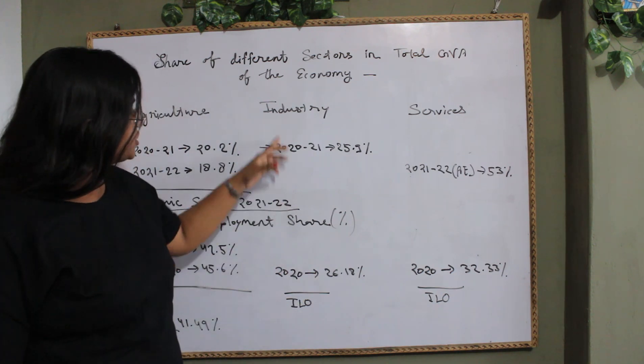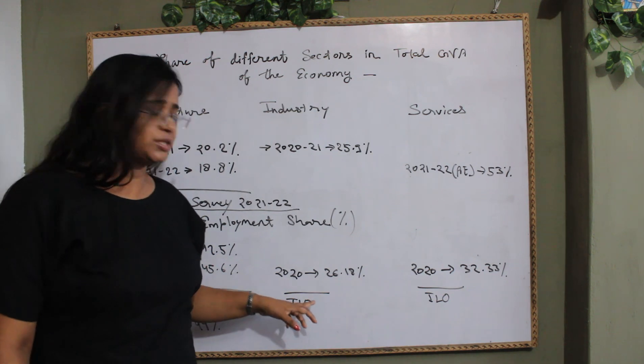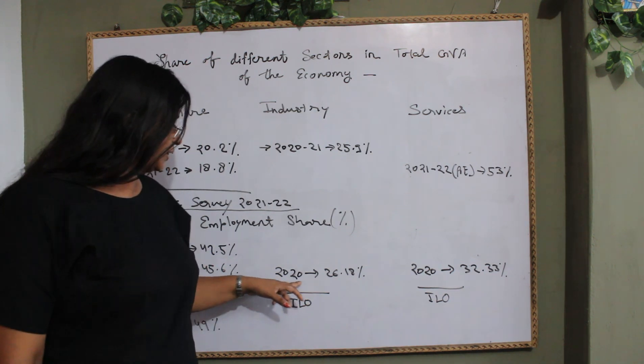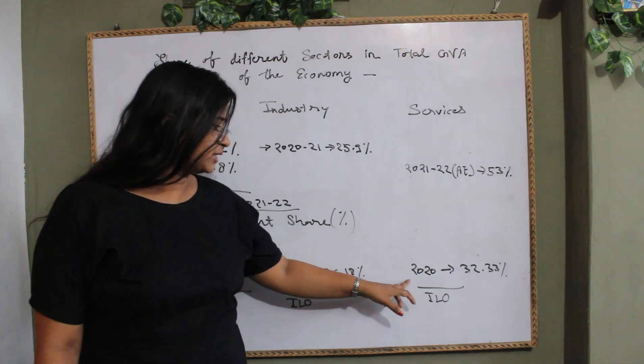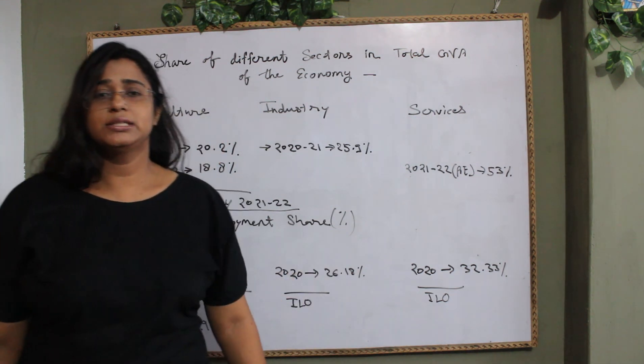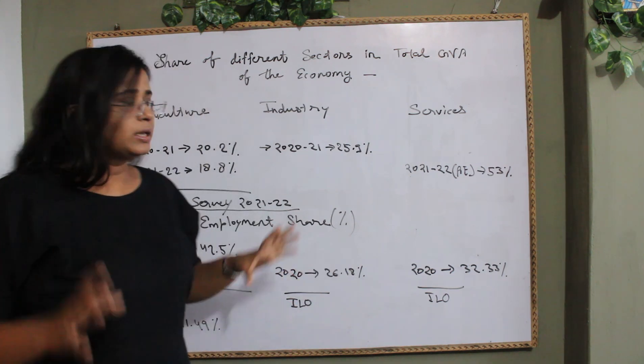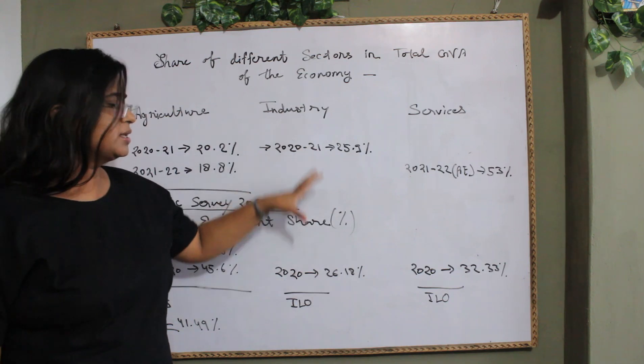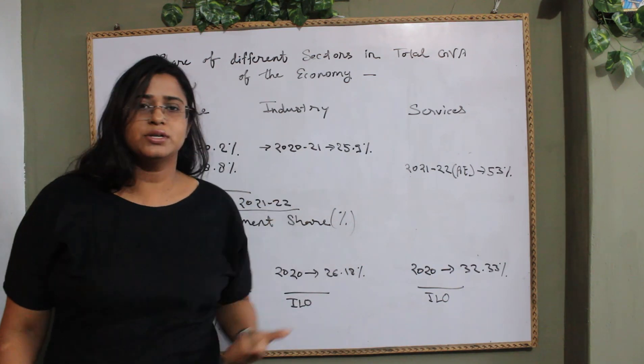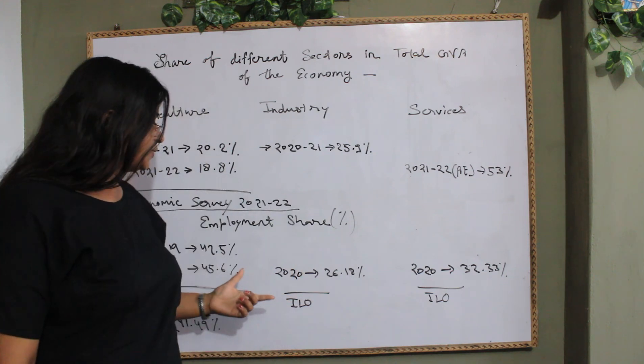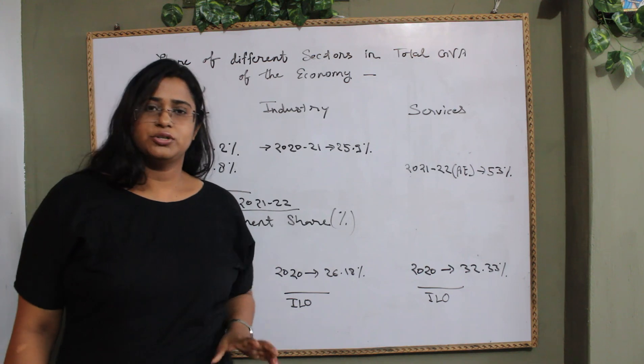And here, for industrial sector, it's ILO's data for 2020, it's 26.18%. And for service sector, it is 32.33% for the year 2020. So, in this industrial sector, you can see this is balanced: 25.9% in GVA contribution and 26.18% for the employment generation.